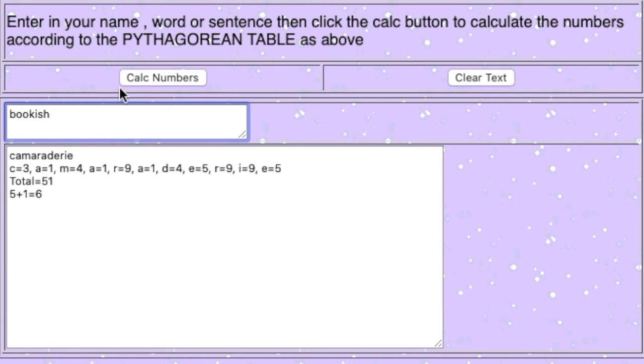Pythagoreans claim that there are only 9 basic numbers, all other numbers repeat themselves.